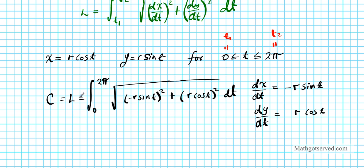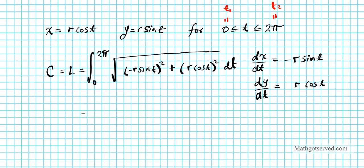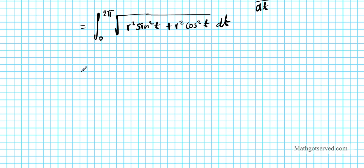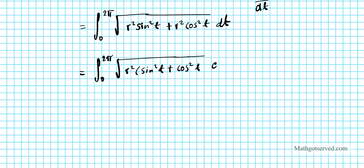Let's simplify this radical. We have the integral from 0 to 2 pi of the square root of r squared sine squared t plus r squared cosine squared t, dt. We can factor out r squared, leaving the square root of r squared times (sine squared t plus cosine squared t).